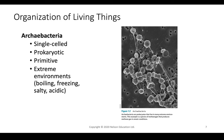Archaebacteria is one of the oldest, most primitive living creatures on Earth. These are all prokaryotes — single-celled. They can live in very extreme environments such as really freezing temperatures, really high temperatures, really salty conditions, and acidic conditions. This is an example of a species called a methanogen, which produces methane gas in conditions where oxygen is not present.